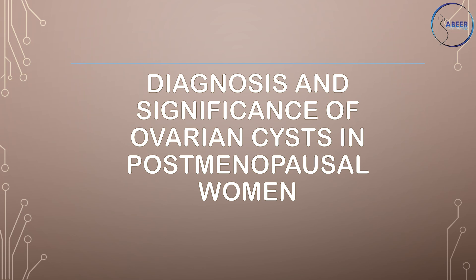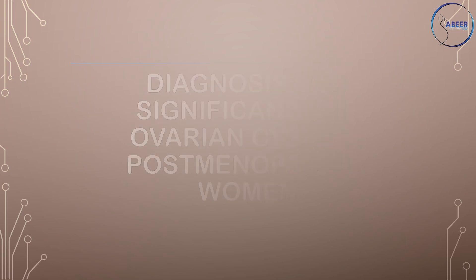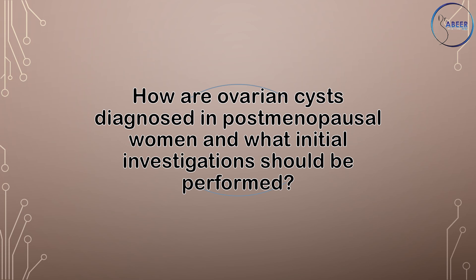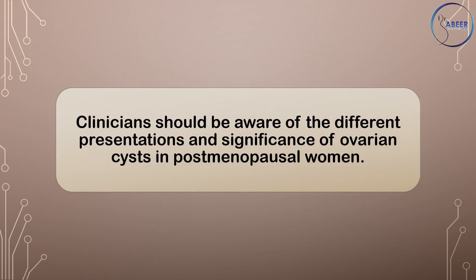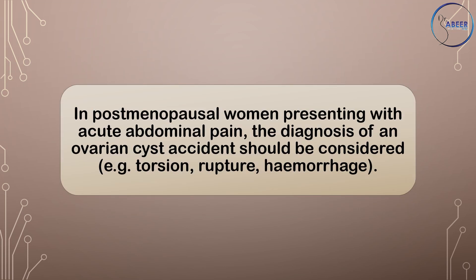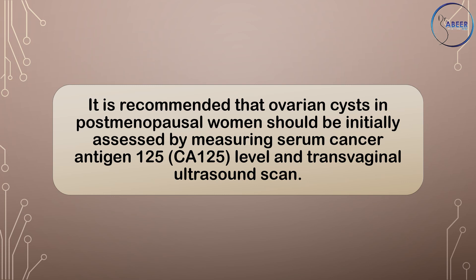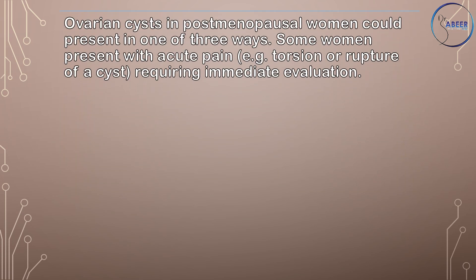Diagnosis and Significance of Ovarian Cysts in Postmenopausal Women: How are ovarian cysts diagnosed and what initial investigations should be performed? Clinicians should be aware of the different presentations and significance of ovarian cysts in postmenopausal women. In postmenopausal women presenting with acute abdominal pain, the diagnosis of an ovarian cyst accident should be considered — for example, torsion, rupture, and hemorrhage. It is recommended that ovarian cysts should be initially assessed by measuring serum CA-125 level and transvaginal ultrasound scan.